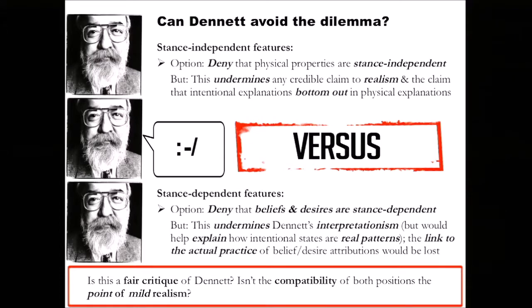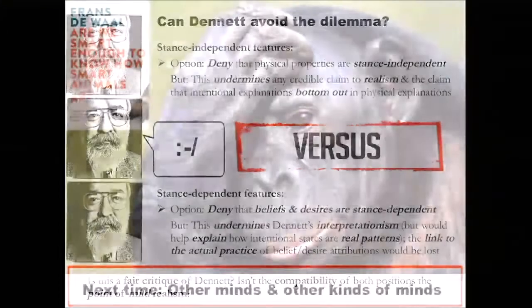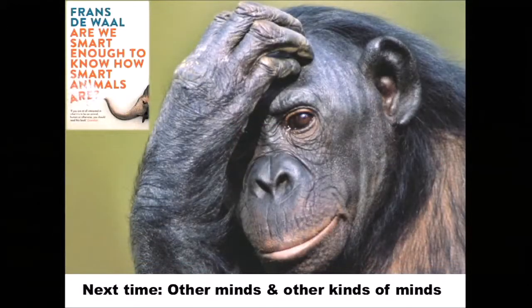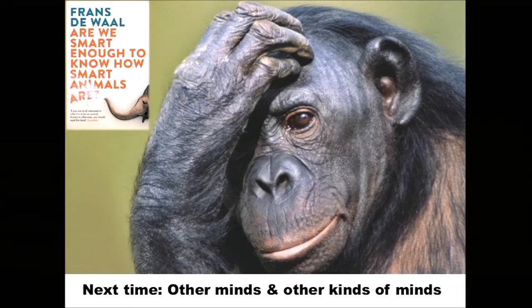OK, so we'll have to finish up there. For next week, we're going to move on entirely from intentionality and look at other minds and other kinds of minds — in particular, moving on from the traditional problem of other minds in philosophy, we'll look briefly at animal cognition. And that will be our last lecture.